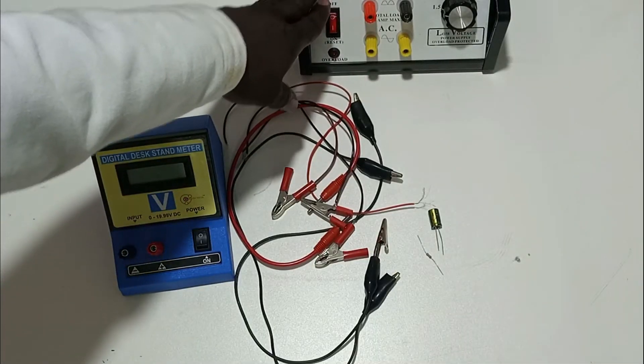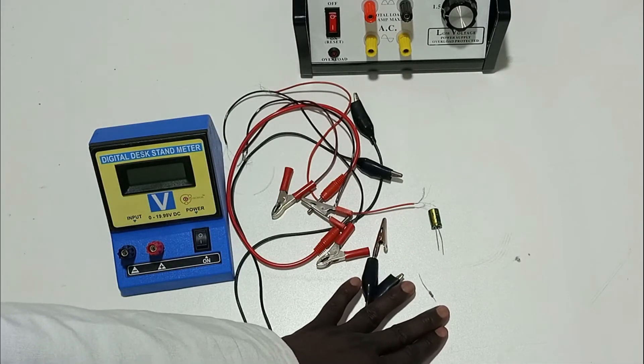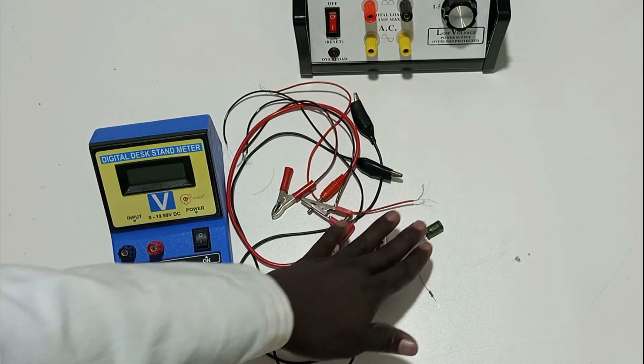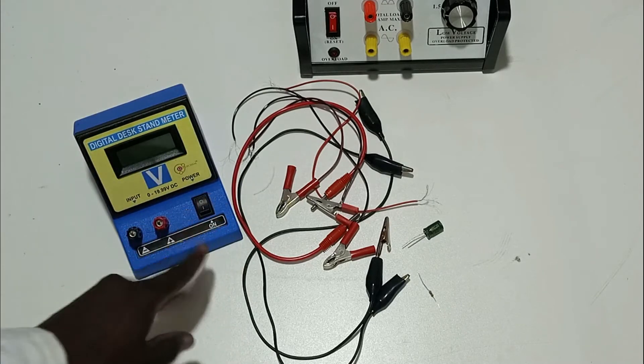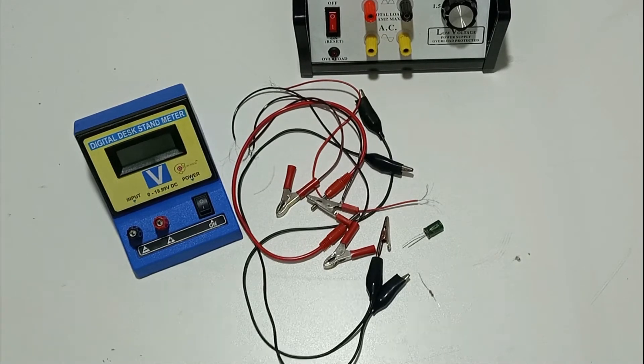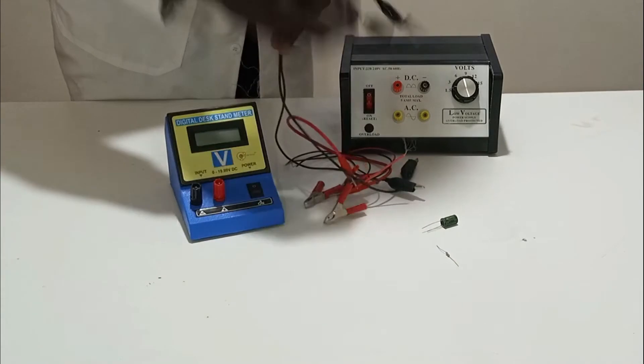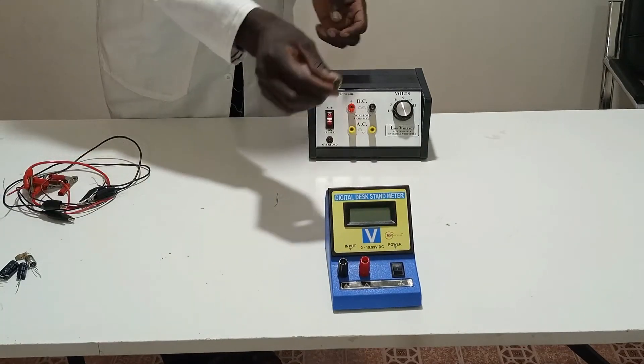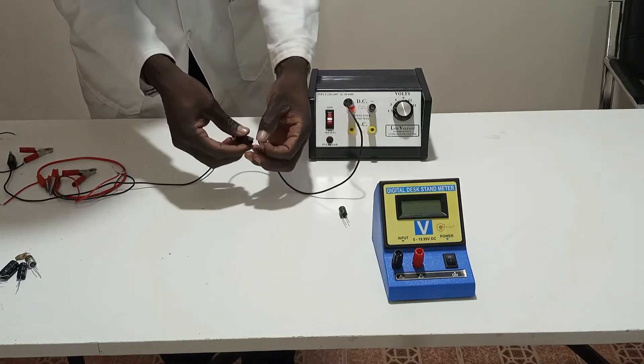So, we have the power supply. We're going to use the DC power supply. We have the connecting leads. This is the one thousand ohm resistor. This is the thousand microfarad, with operating voltage of 16 volts. And then we have the voltmeter here, which is going to help us to confirm if there's any charging or discharging of the capacitor. So, from here we proceed as follows.